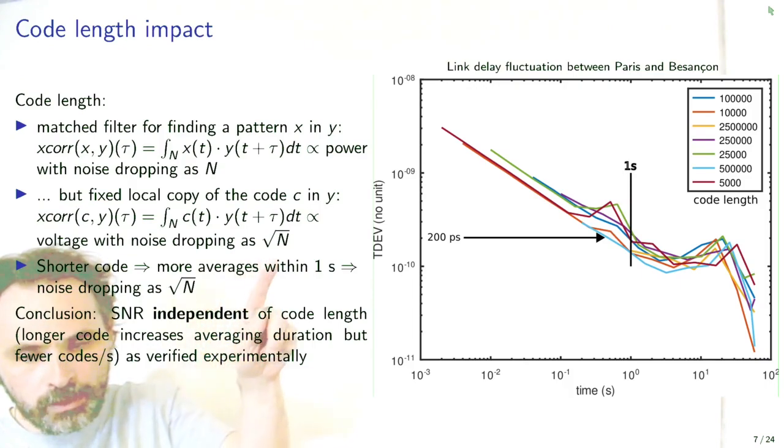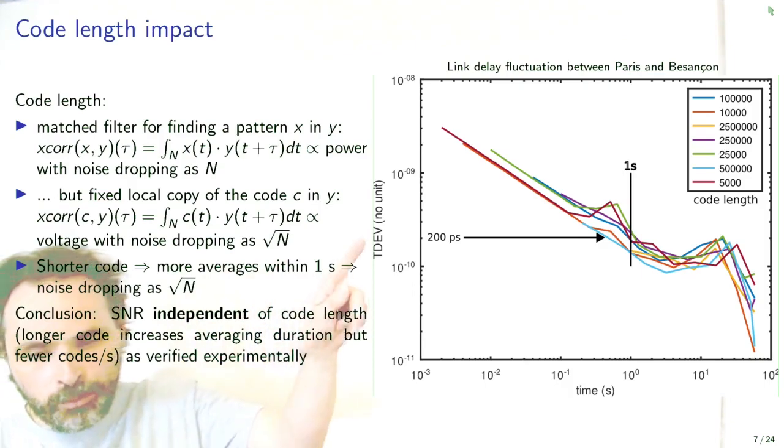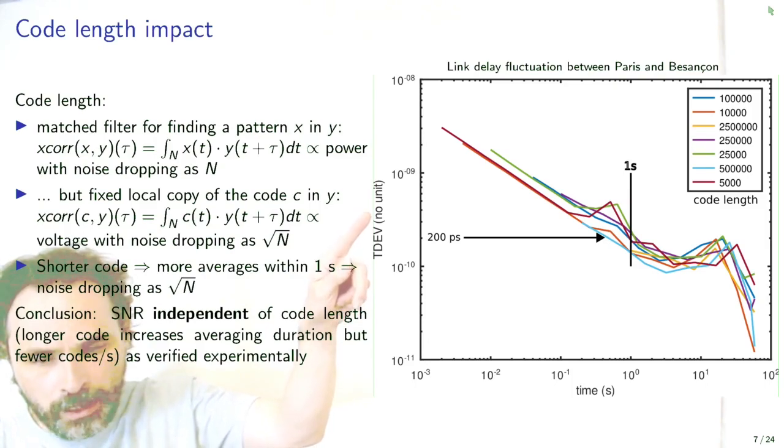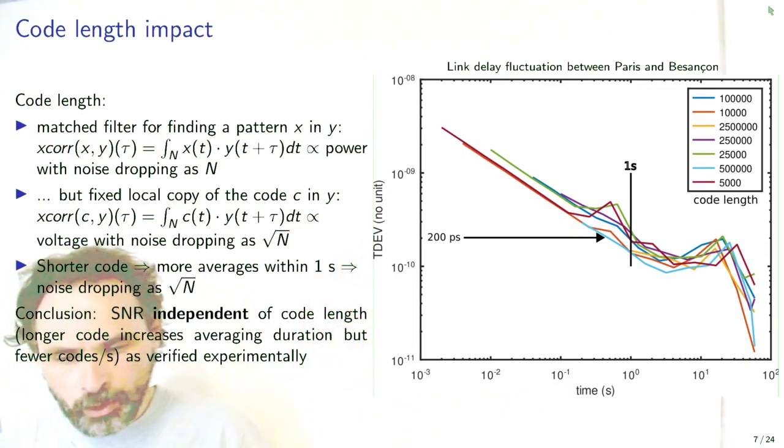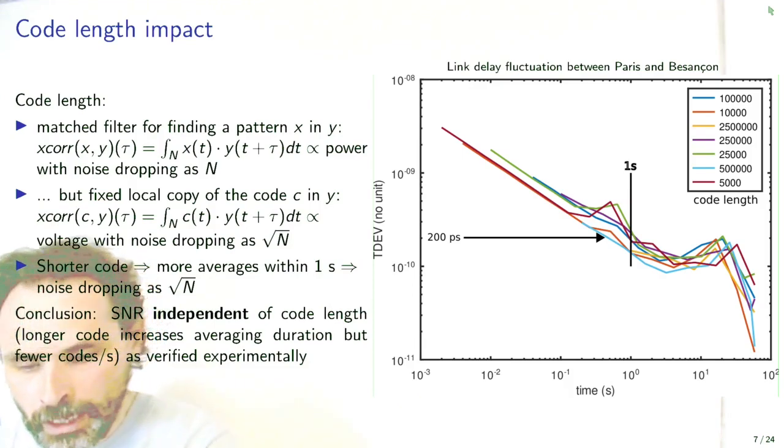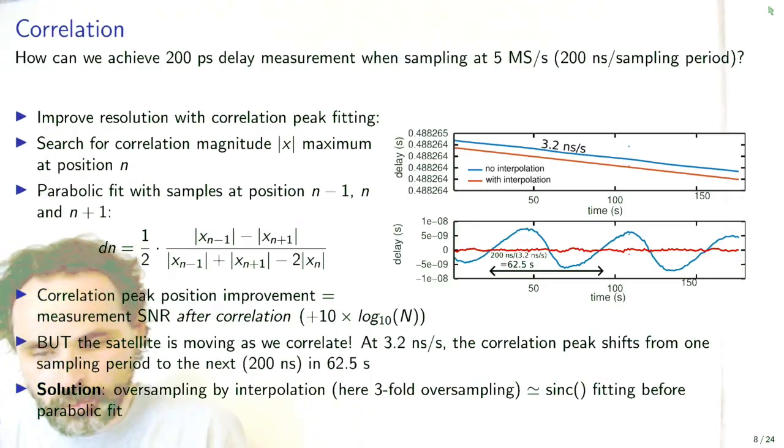The first question we might wonder is how to select the code length. The SATRE is using a 4 millisecond code length. In this case, we started working with 1 second code length. The question arises from the signal-to-noise ratio gained from the correlation. If we use a match filter approach where we do a measurement on one channel and a measurement on the other channel, then the product of these two voltages will be a power and the improvement rises as n the duration of the code that is transmitted.